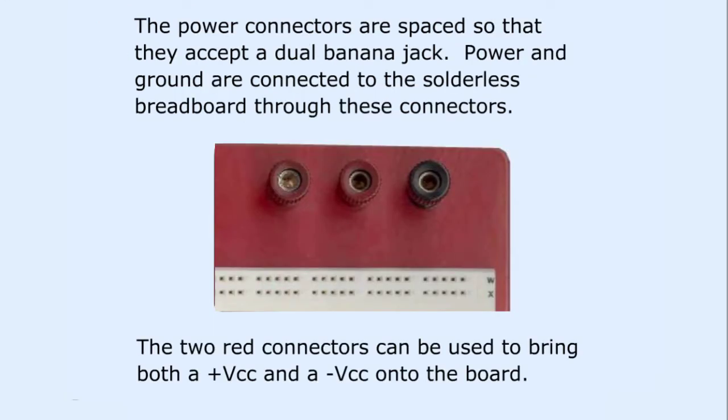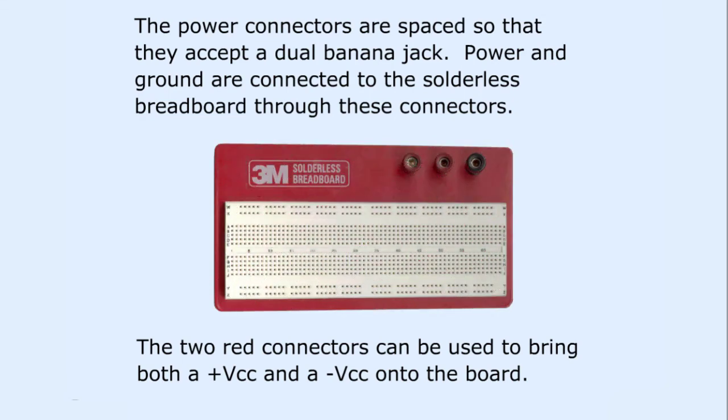The power connectors are spaced so that they accept a dual banana jack. Power and ground are connected to the solderless breadboard through these connectors. The two red connectors can be used to bring both a positive VCC and a negative VCC onto the board.